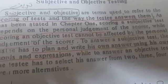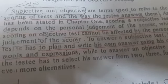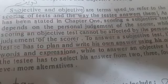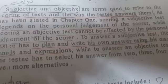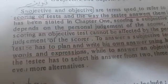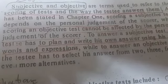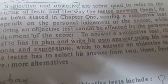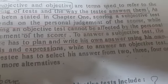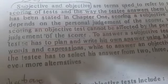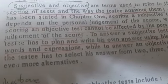Scoring a subjective test depends on the personal judgment of the scorer, while scoring an objective test cannot be affected by the personal judgment of the scorer.